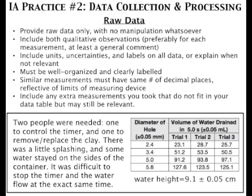The raw data section should be the easiest part of the lab report to complete. It is very technical, and if you follow the rules outlined, there shouldn't be any problem. The most common mistakes in this section are with uncertainties and decimal points. All data measured using a given measuring device should have the same number of decimal points, and the uncertainties presented in the raw data table should reflect the uncertainty of the measuring device used.